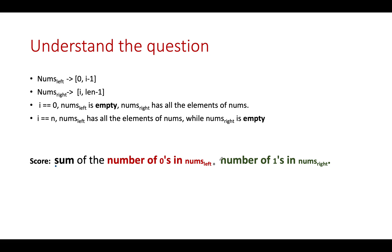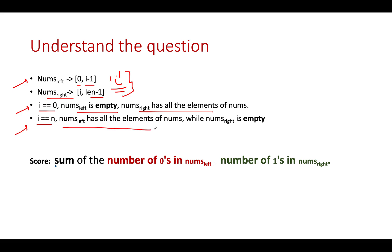Let's extract the key pointers from the question. The left sub-array is defined from index 0 up to i-1. The right sub-array starts from index i up to nums.length-1, given a division at index i. If i equals 0, the left sub-array is empty and the right has all elements. If i equals the length of the array, the left has all elements while the right is empty. The score is given by the number of zeros in the left part plus the number of ones in the right part.